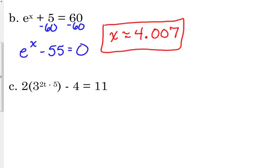Okay? Example C. We've got 2 times 3 to the 2t minus 5 minus 4 is equal to 11. We need to move that 11. So we've got 2 times 3 to the 2t minus 5 minus 15. You need to do that in your calculator. That's fine.